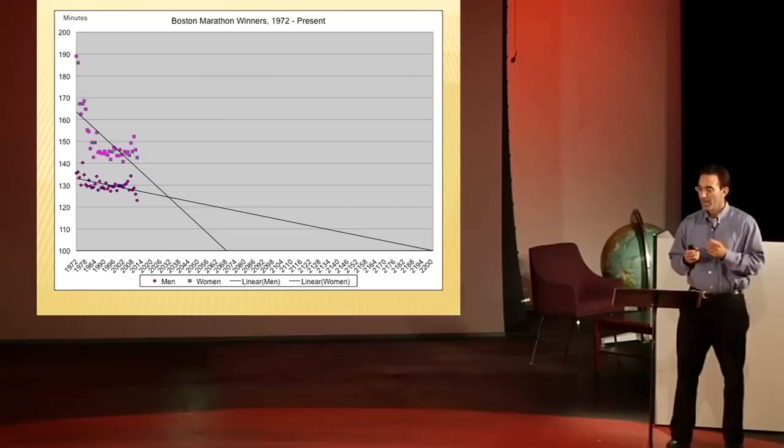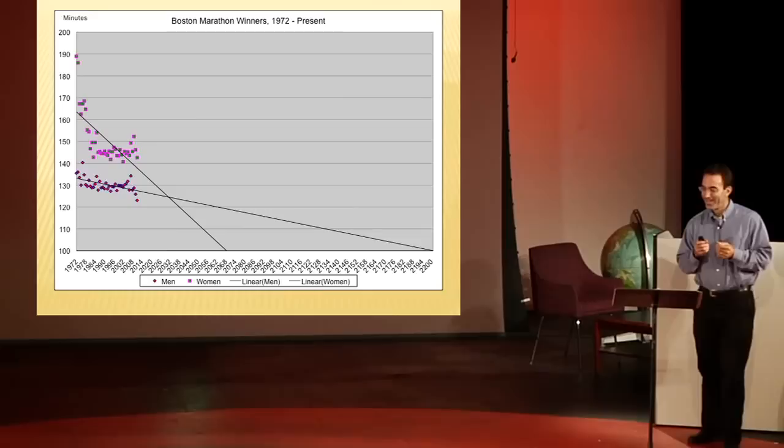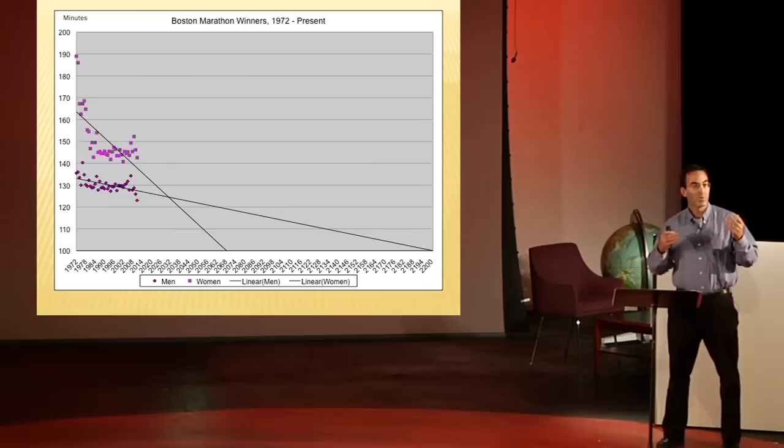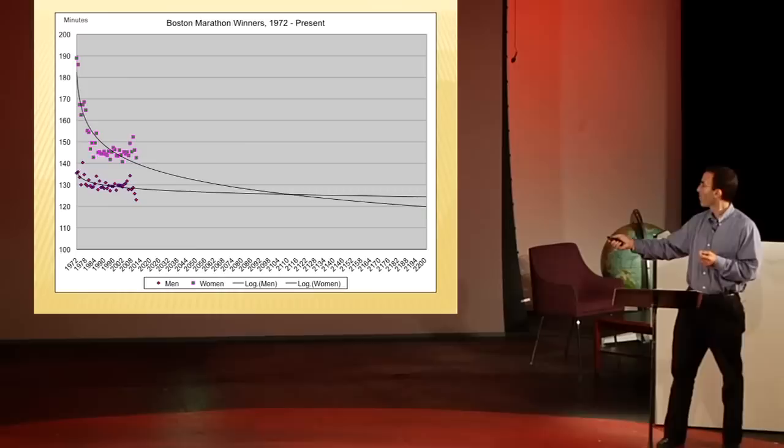But some of you out there, and let's call you men, Coach Dave accepted, may not be happy with that answer. And so you say, well, using lines makes no sense, because lines predict that the women's times and the men's times will go to zero and eventually become negative. So, okay, we'll use a different regression. There are lots of types of regression. We're going to use something called logarithmic regression, which uses a type of curve.